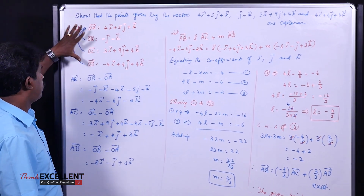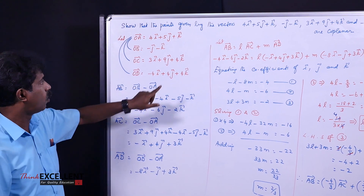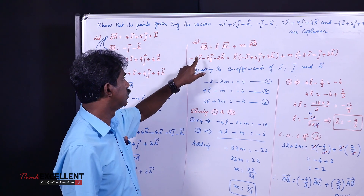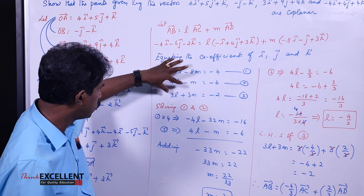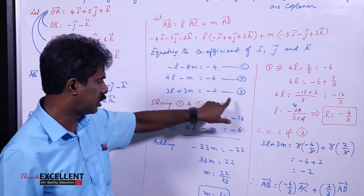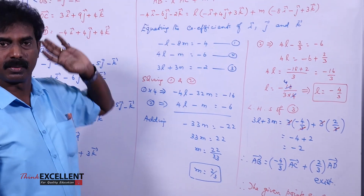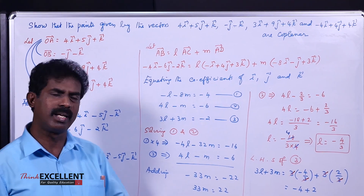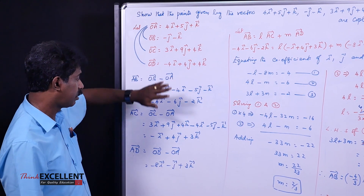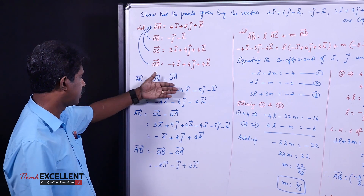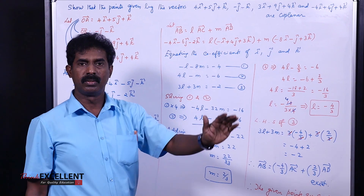To summarize the method: given four points, find AB vector, AC vector, and AD vector. Write AB vector equals L times AC vector plus M times AD vector. Equate i, j, k coefficients to get three equations. Solve any two to find L and M, then substitute into the third to check. If it satisfies, the relation exists and the four points are coplanar. If three vectors are given instead of points, simply name them A vector, B vector, C vector, and write A vector equals L times B vector plus M times C vector, then proceed the same way.